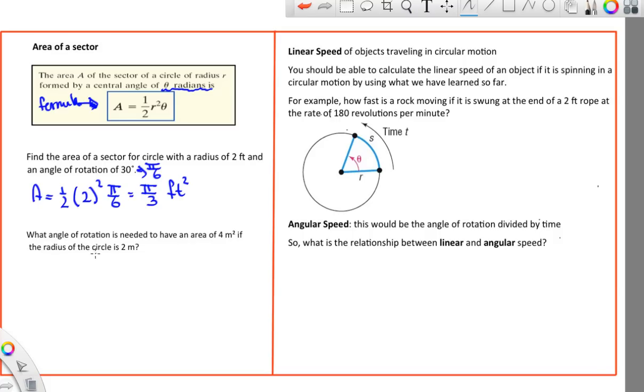What angle of rotation is needed to have an area of 4 meters squared if the radius of the circle is 2? If we know that the area is 4 and we know that the radius is 2, we should be able to solve for the angle. That's 4 equals one half times 2 squared times theta, so that's 2. That means the angle has to be 2. When it's a whole number or a number without pi, we generally do write radians behind it. It just helps people that are reading the problem.